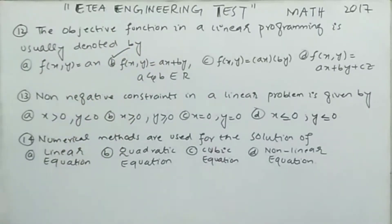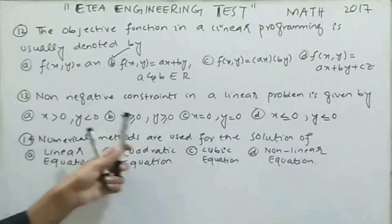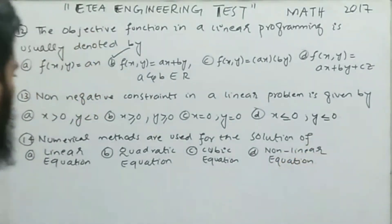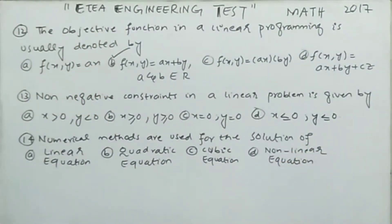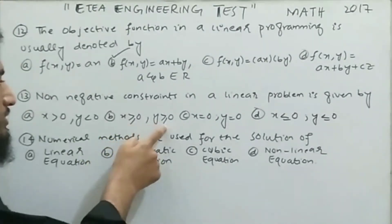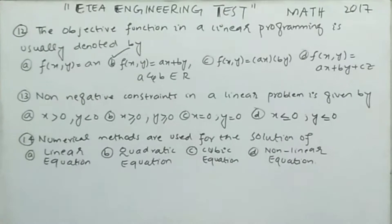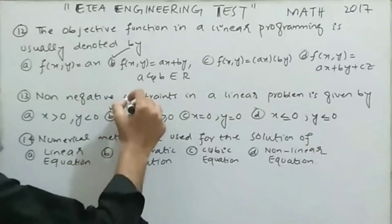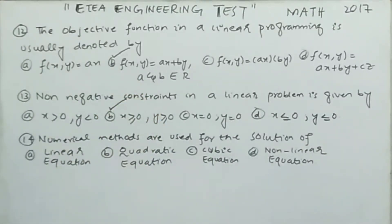Moving to MCQ number 13 on non-negative constraints in linear programming. The variables used in the linear inequality are called non-negative constraints, and those variables x and y must be greater than or equal to zero. So option B, where x ≥ 0 and y ≥ 0, represents the non-negative constraints. The correct option is option number B.